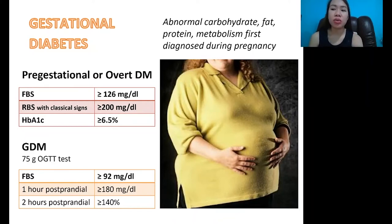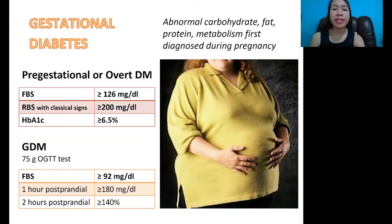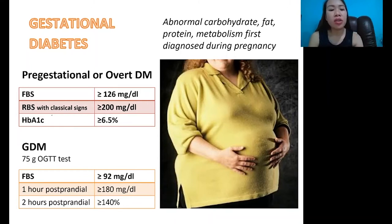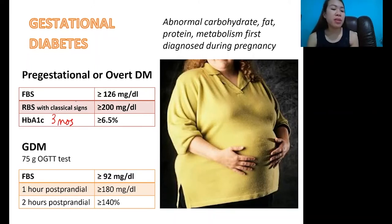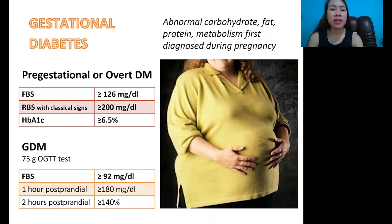When you say fasting blood sugar, the patient has not eaten for 8 hours before the blood is drawn. We also have hemoglobin A1C, or HbA1C. This checks in the blood how well the patient's sugar has been controlled for the past 3 months. If it is greater than or equal to 6.5%, then we can diagnose the mother as having pre-gestational diabetes.